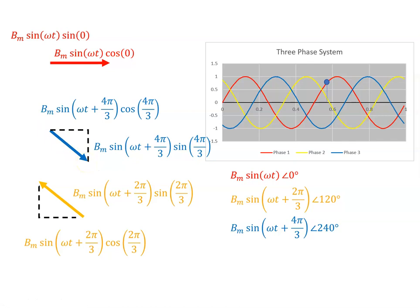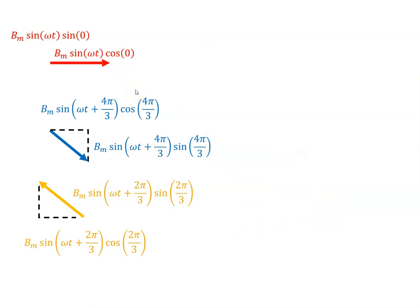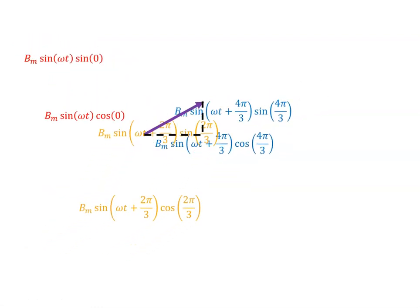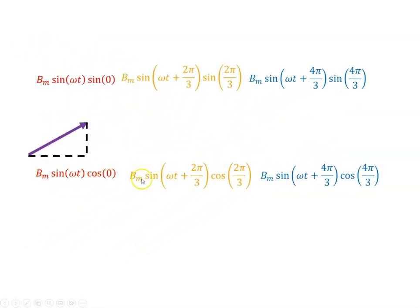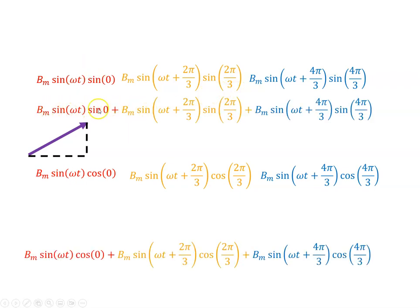To get the resultant, we add all the horizontal components from the red, yellow, and blue phases to give the resulting horizontal component, and similarly add all the vertical components from each phase to give the resulting vertical component.